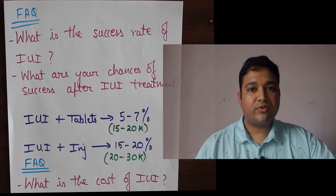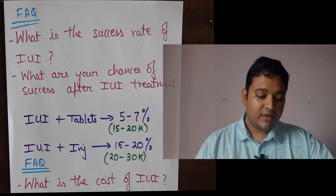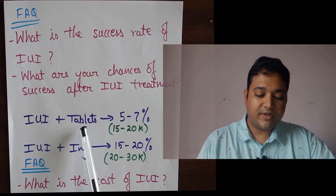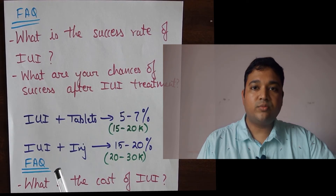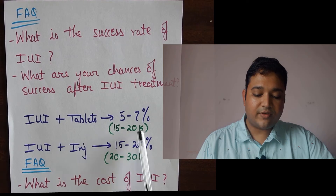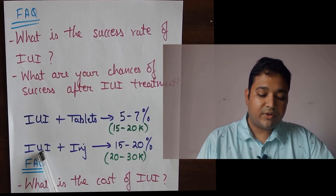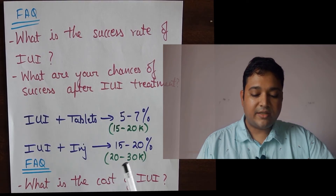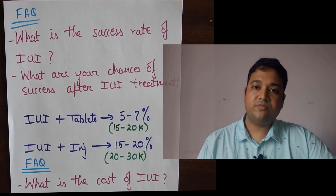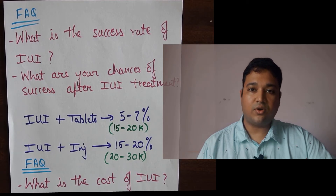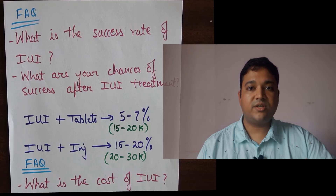Regarding the cost of IUI treatment: when combined with tablets like clomiphene citrate or letrozole for ovulation induction, the cost per cycle is approximately 15,000 to 20,000 rupees. When combined with a superovulation protocol using injectables, the cost is approximately 20,000 to 30,000 rupees per cycle. So on this slide you have the complete information on cost and success per cycle for the couple.